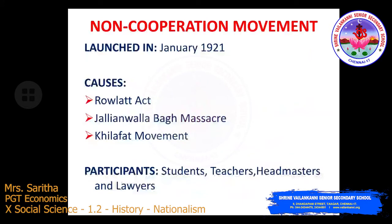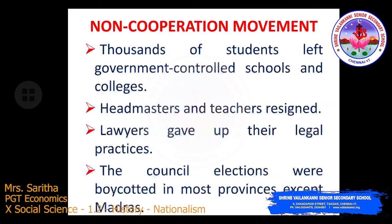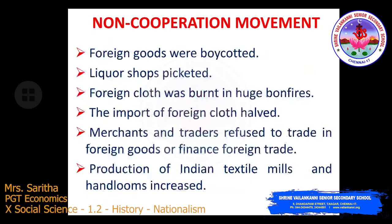The non-cooperation movement was launched in January 1921. Its main causes were the Rowlatt Act, the Jallianwala Bagh massacre, and the Khilafat movement. Participants included students, teachers, headmasters, and lawyers. Thousands of students left government-controlled schools and colleges, headmasters and teachers resigned their jobs, lawyers gave up their legal practices, and council elections were boycotted in most provinces except Madras.